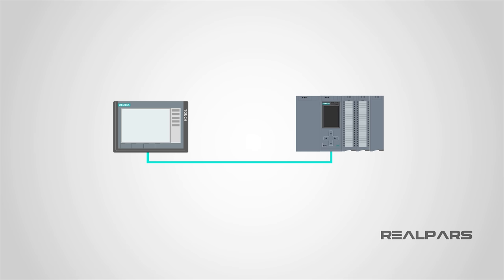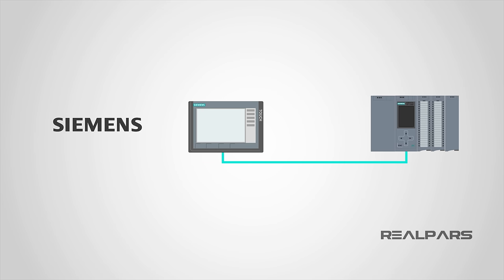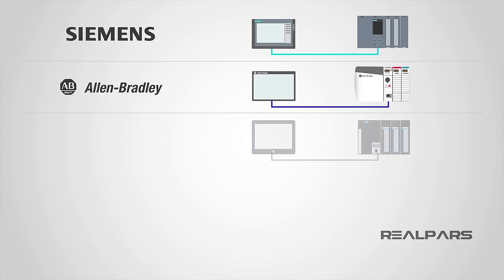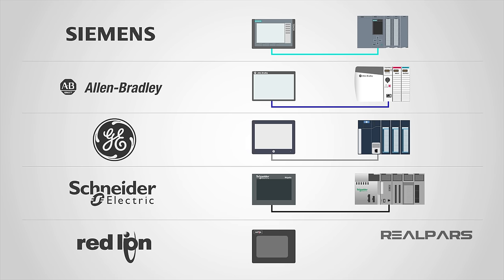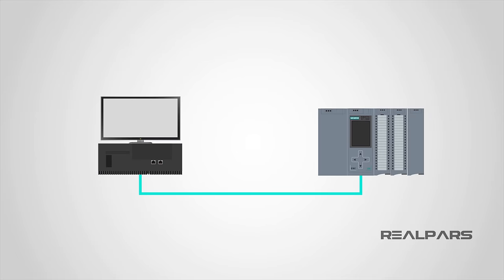HMI panels can be procured from the same manufacturer as the controller, such as Siemens, Allen-Bradley, GE, and Schneider Electric, all of which produce their own brand of HMI panels. There are also independent HMI panel manufacturers, such as Red Lion. The HMI can also be an industrial computer from Dell or any other manufacturer that meets the rugged requirements for the PC.